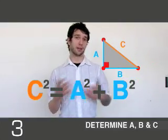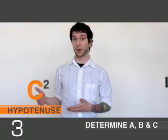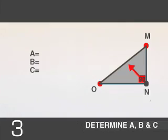A and B can be interchanged, it doesn't really matter, as long as C remains the hypotenuse. Watch me determine A, B and C for the following examples. Example 1.